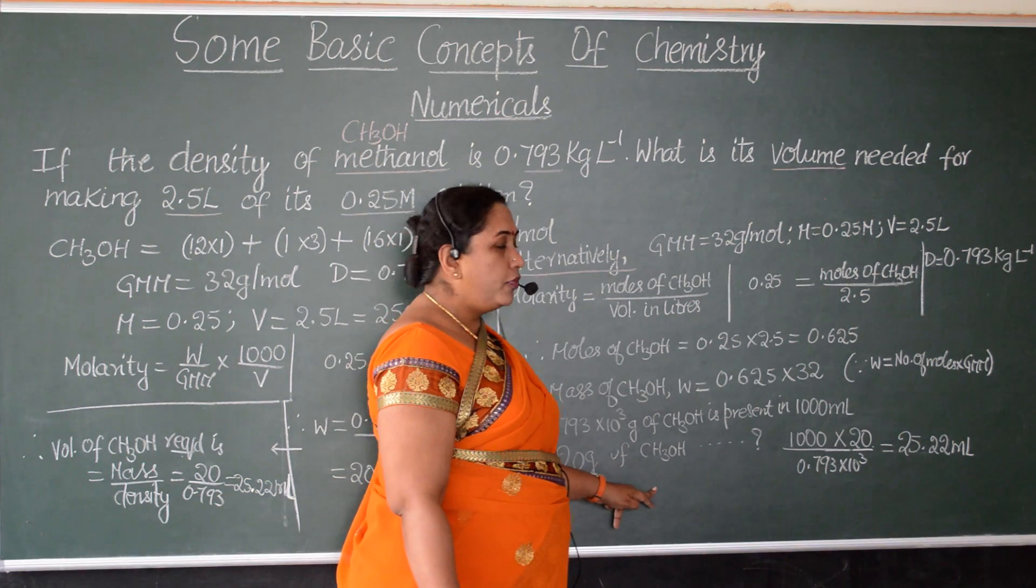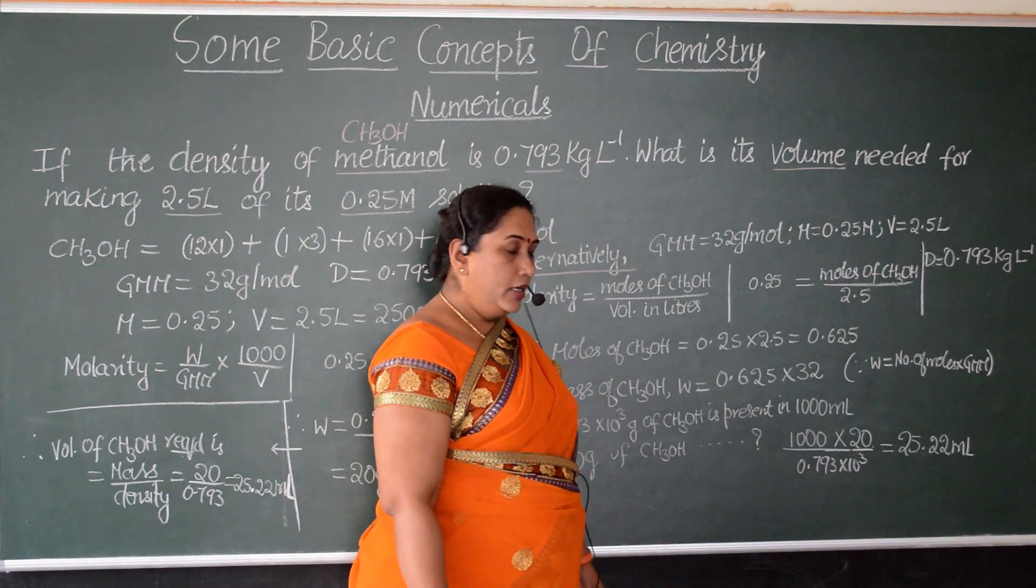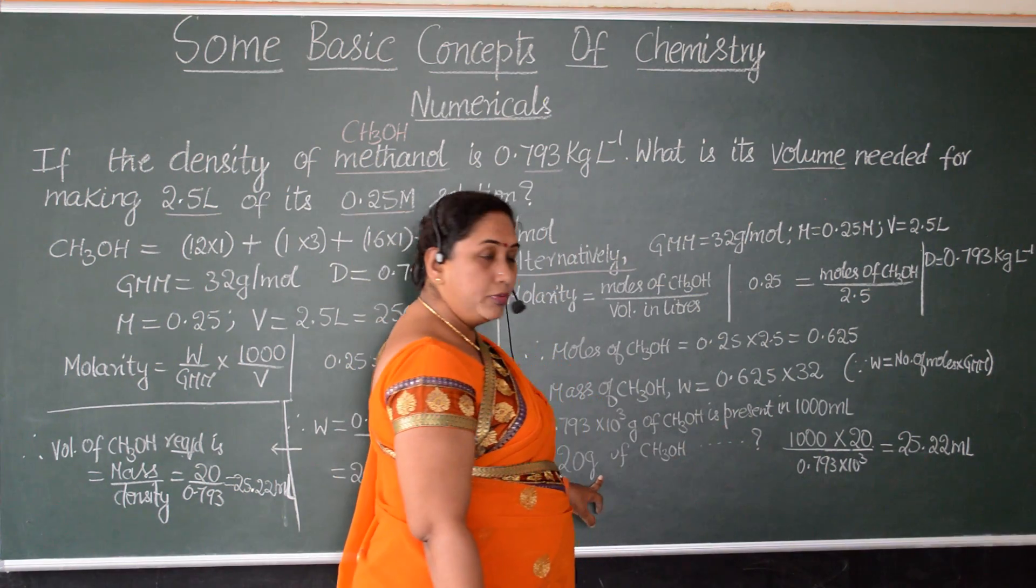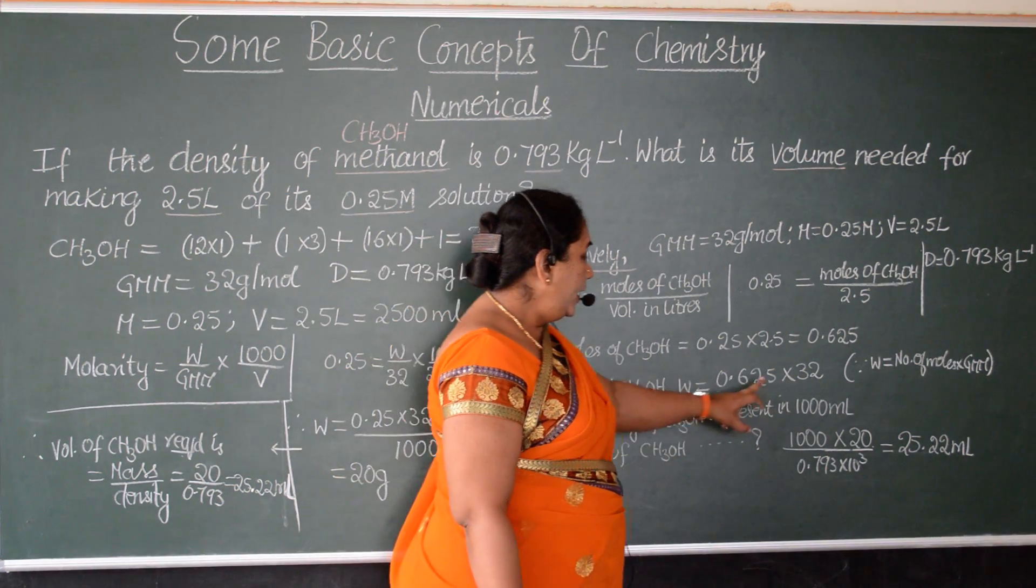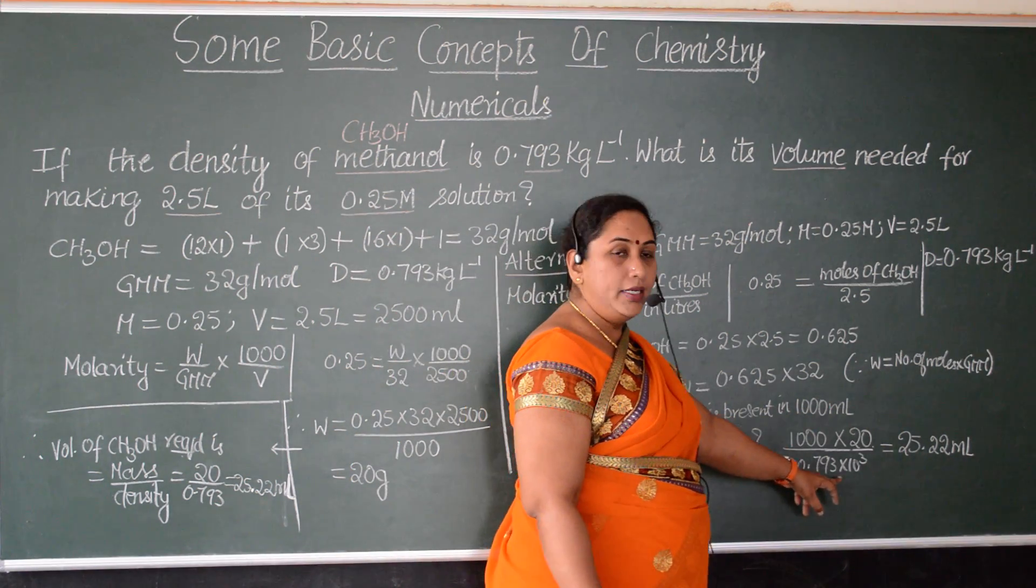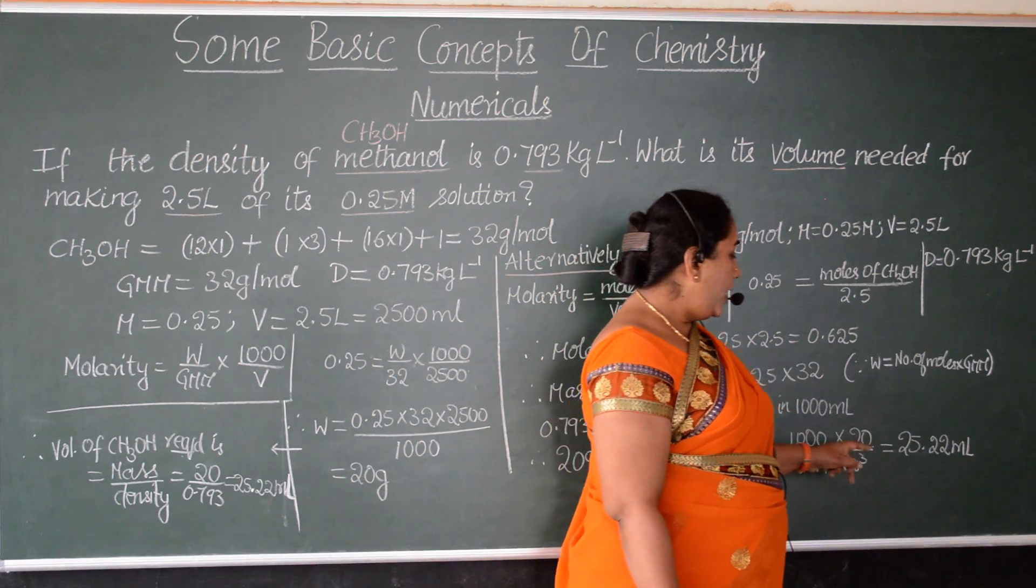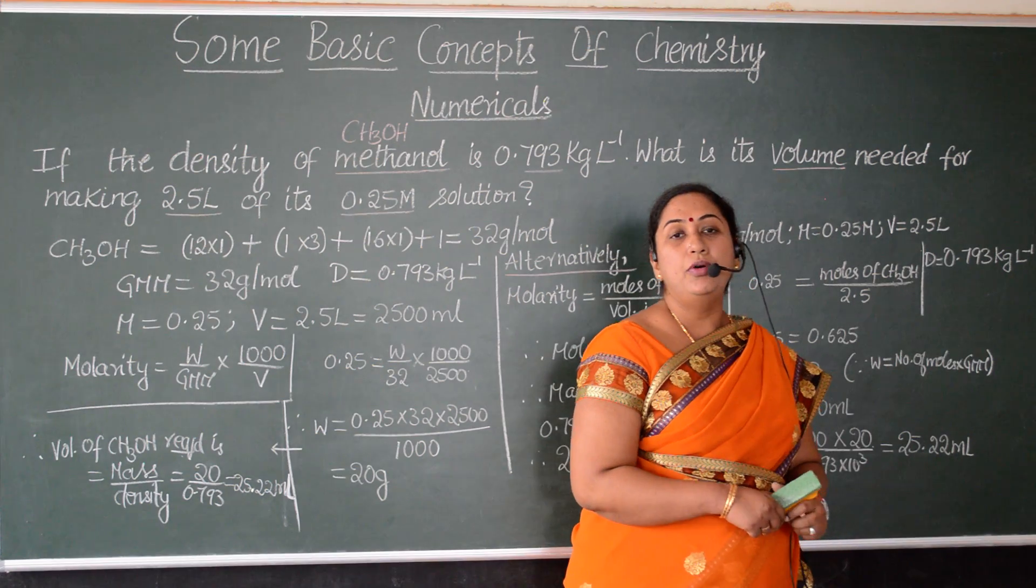Therefore, 20 grams of methanol is present in how much quantity? So, therefore, the substitution will be 20 into 1000 divided by that of density 0.793 into 10 to the power 3. When we simplify this we get the value as 25.22 ml.